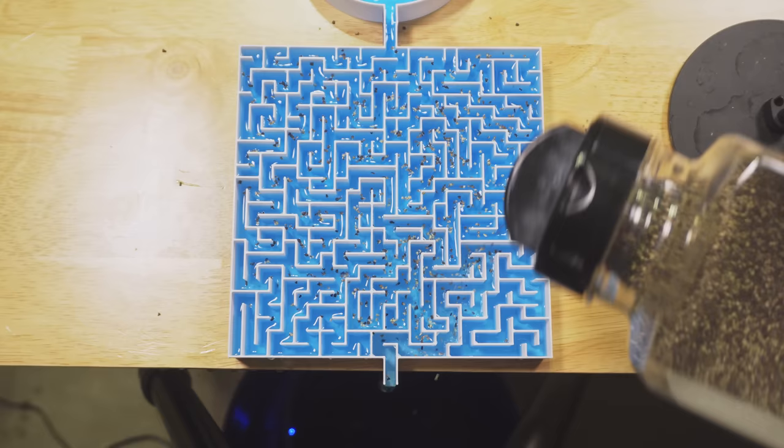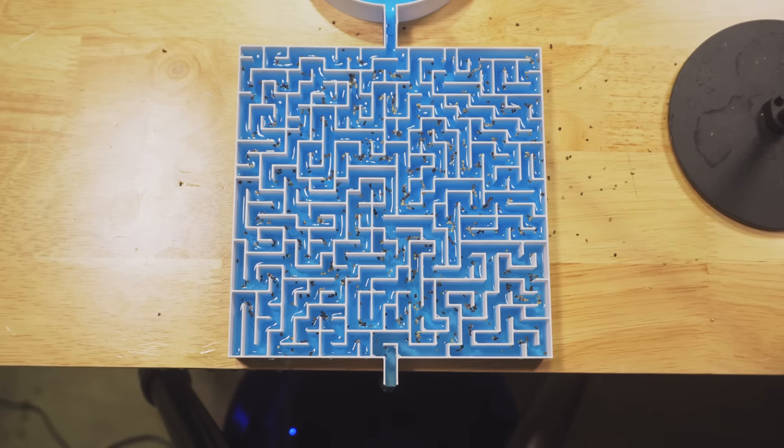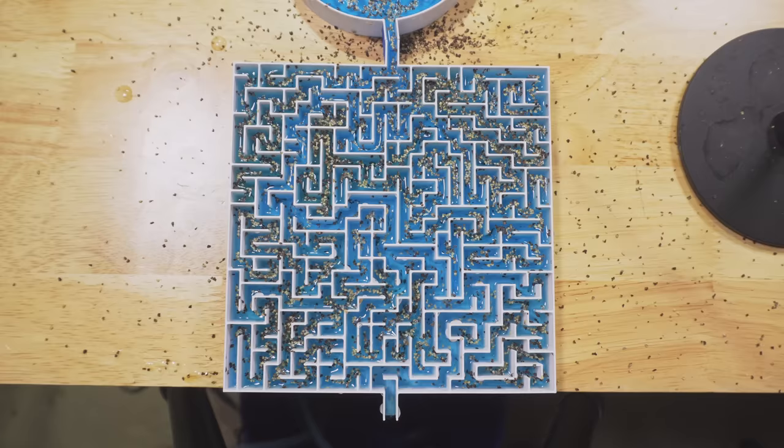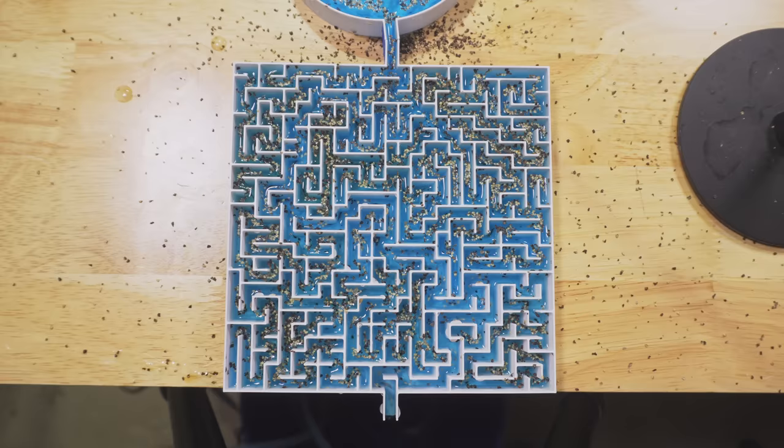To fix this, I raided the barbecue cabinet and threw some pepper on top. Now, where we see pepper standing still, the water isn't flowing. And where we see individual granules moving, we know they're being dragged along by the water. And awesomely, the only pepper particles that are progressing through the puzzle are the ones that fall along the shortest path solution.